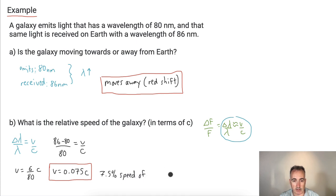So it's not considerable. It's not at the speed of light, but it is still going pretty fast. So that means that the galaxy is moving away from us at 7.5% the speed of light.